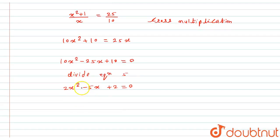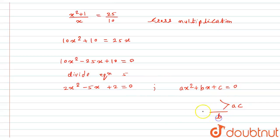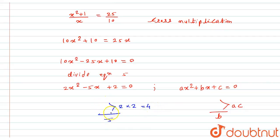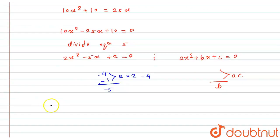Now I need to factorize this equation. Comparing with the auxiliary equation ax squared plus bx plus c equals 0, I multiply a and c: here a equals 2 and c equals 2, so a times c equals 4. I need two numbers whose product is 4 and whose sum is minus 5. Those numbers are minus 4 and minus 1, since minus 4 times minus 1 equals plus 4, and minus 4 plus minus 1 equals minus 5.